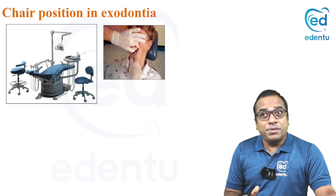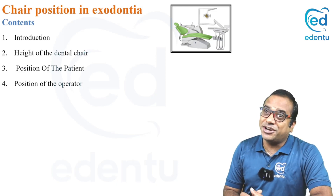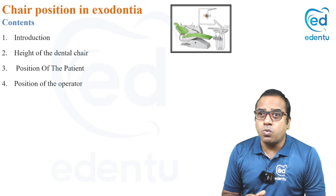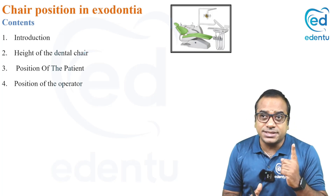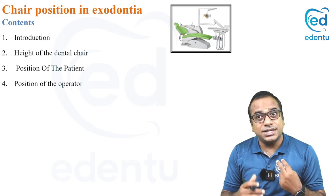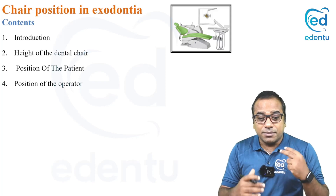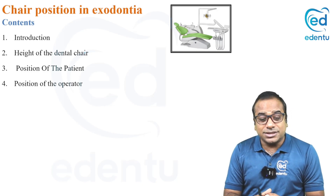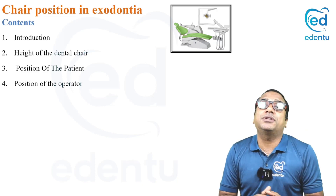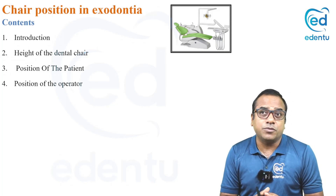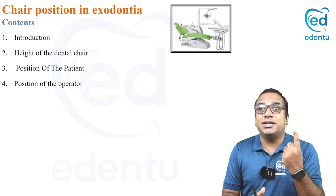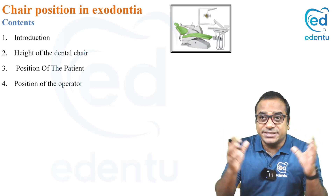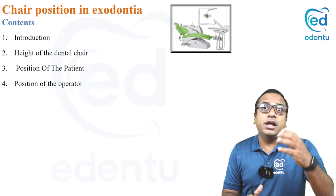In this topic we will be discussing various aspects like introduction and height of the dental chair. There are three parameters: the dental chair height has to be adjusted; the operator (the dentist) cannot change their own height but must position correctly for good accessibility; and the position of the patient also needs to be adjusted. When all three things synchronize, we can do a beautiful atraumatic extraction.